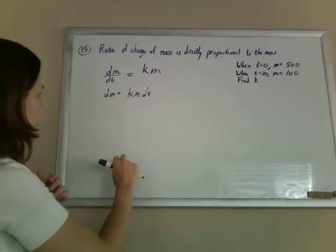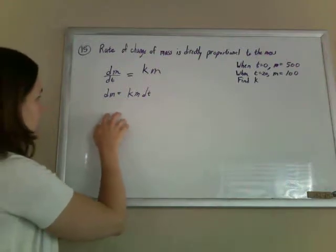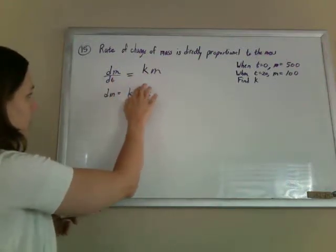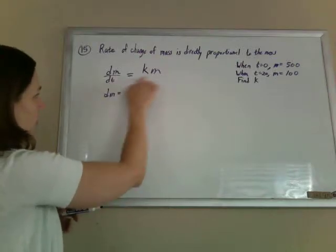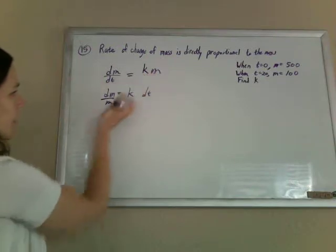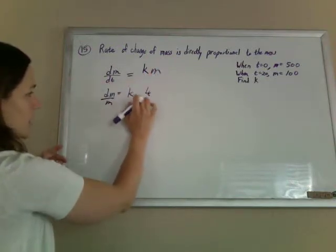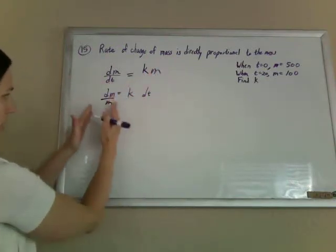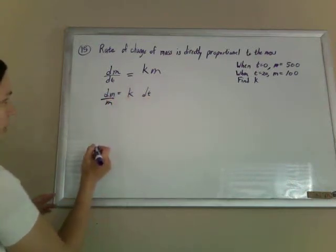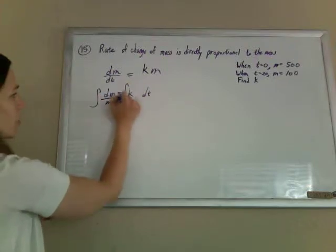Let's see. Separable differential equations, so I want to get everything, separate the m's and the t's. So I need to multiply by dt and then divide by the m. So divide by the m, scoot it over here, multiply by the dt, put it over there. So now I've separated m's and t's, and now I can take the integral of both sides.